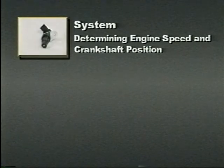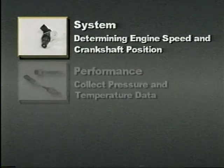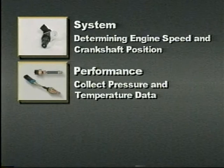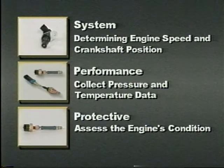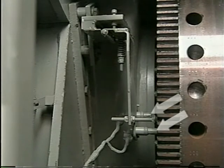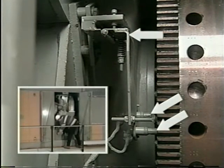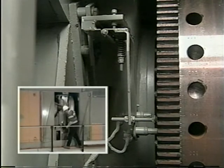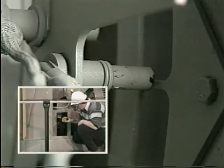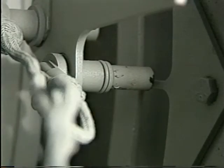MDEC relies on various sensors to monitor the engine's performance and condition. These sensors can be broken down into three main types: system sensors used for determining engine speed and crankshaft position; performance sensors used to collect pressure and temperature data; and protective sensors used to assess the engine's condition, similar to the protection offered by the Woodward governor and engine protective device. The system sensors are actually two magnetic pickups mounted on a special spring-loaded bracket at the left rear corner of the engine. By reading timing plates attached to the flexible coupling disk, these pickups feed the ECMs precise engine speed and crankshaft position.